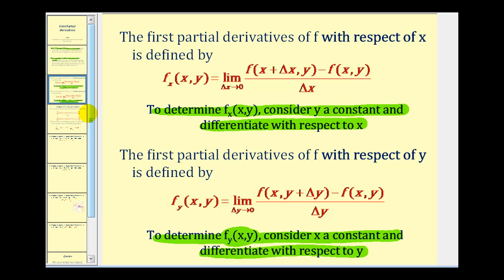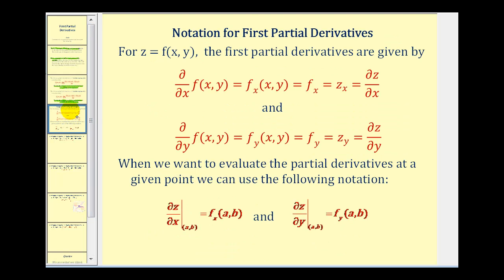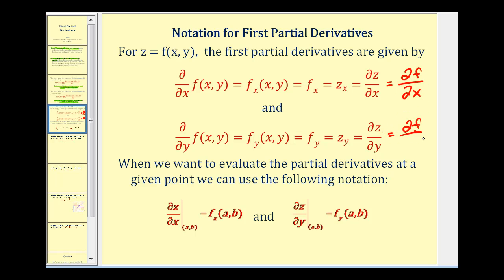Before we do that, let's take a look at some different notation for partial derivatives. All of these notations here represent partial derivatives of f with respect to x or with respect to y. One that I left off here is the partial of f — instead of the partial of z — with respect to x, and the partial of f with respect to y. And if we want to evaluate these at a specific point, we can use the notation shown below.